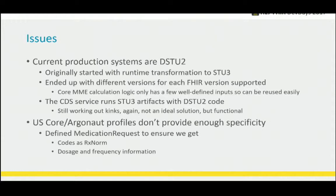Some issues with the approach: current production systems are DSTU2. We started with runtime transformation where when the CDS Hooks call came in with DSTU2 data, we would runtime transform it to STU3. We ended up with different versions for each version of FHIR we support. The core of the calculation is independent of the FHIR version, so it was easier to just accept an STU2 version of the resource and call into the same library for the calculation. There are still kinks with running HAPI FHIR and multiple versions in the same process, but it's functional.